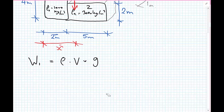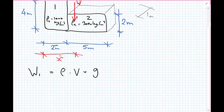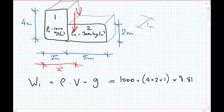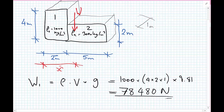For box one: rho one equals 1000 kilograms per meter cubed, multiplied by the dimensions four meters height times two meters width times one meter out-of-plane, multiplied by 9.81 meters per second squared acceleration due to gravity. We get that weight one is 78,480 newtons, or 78.5 kilonewtons.